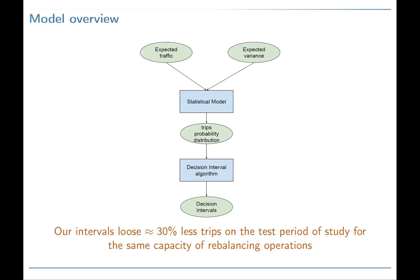We show in our paper that our intervals lose approximately 30 percent less trips on the test period of study for the same capacity of rebalancing operations of the service provider.